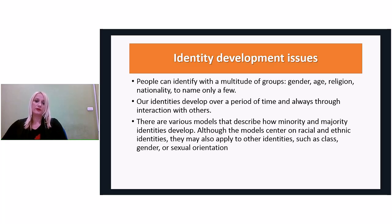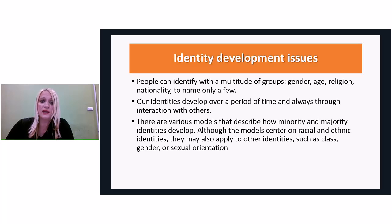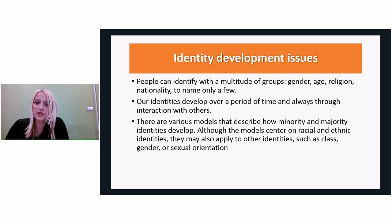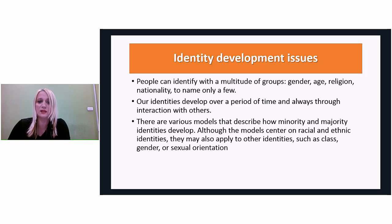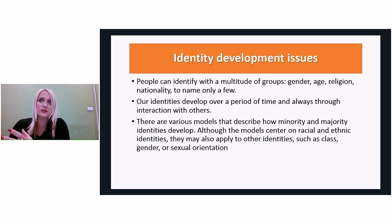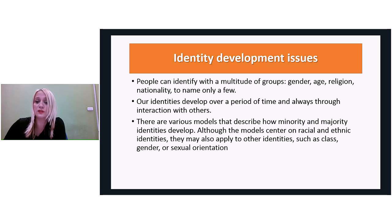Then we have stage five — integration. Majority group individuals are now able to internalize their increased consciousness and integrate their majority identities into all other facets of their identity. They not only recognize their identity but also appreciate other groups. This process of integration affects other aspects of social and personal identity, including religion and gender. Some theories acknowledge that these models are rather simplistic in explaining the diverse and complex experience people have, and do not fully account for the impacts of diverse environments and interlocking identities.